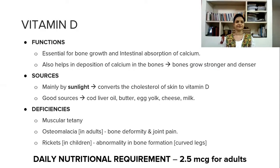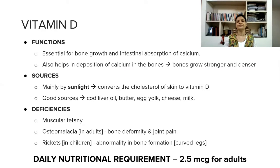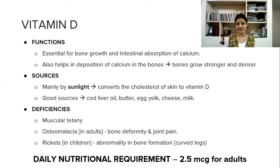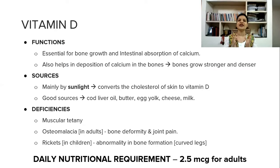Now, vitamin D. Functions: it is very, very essential for bone growth. Also, for the absorption of calcium through the intestine — when calcium is present in your body but if there is no vitamin D, absorption cannot happen. So for the absorption of calcium, vitamin D is necessary. Not only that, but also for the deposition of calcium in the bones, vitamin D is essential, so the bones become stronger and denser.